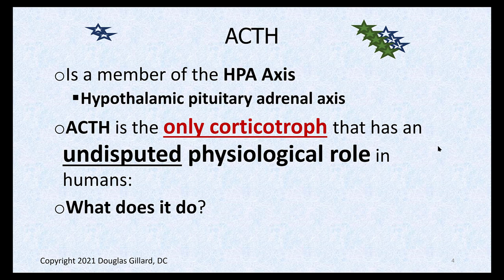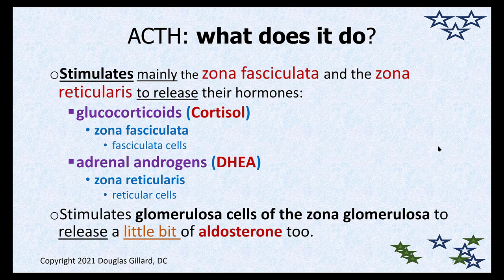ACTH is the only corticotroph with an undisputed physiological role in humans. It stimulates the release of cortisol and DHEA and a little bit of aldosterone. Cortisol is not the only glucocorticoid released from the zona fasciculata, but it is the main hormone associated with ACTH. Cortisol and glucocorticoids are released from fasciculata cells in the zona fasciculata.